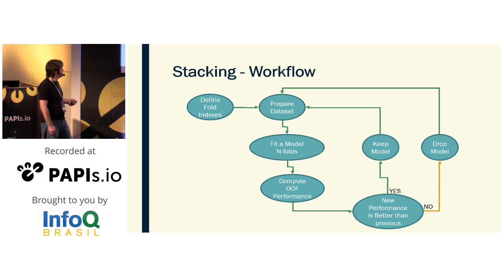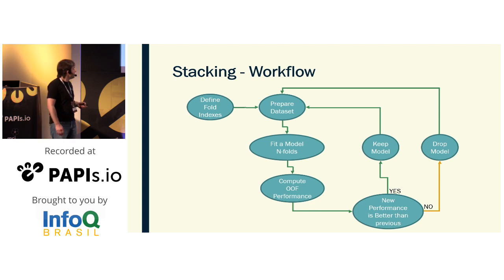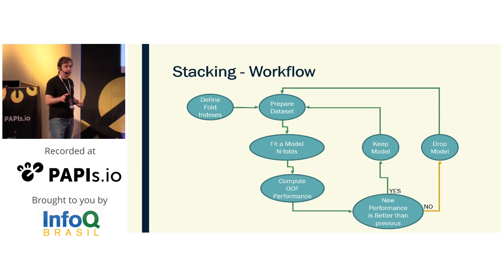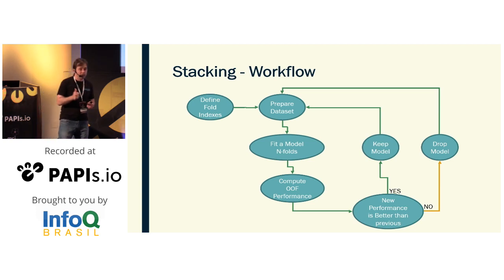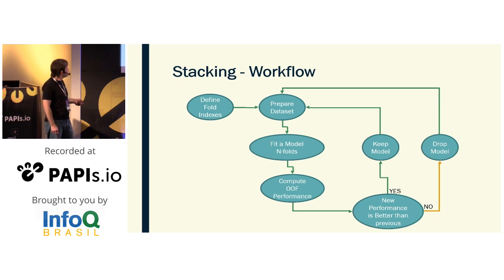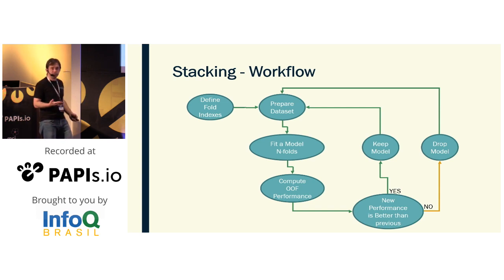The workflow: compute out-of-fold performance and do the stacking. If the performance is better than the previous, keep the new model and try to find a new one. If the performance of the new stacking is not good enough, just drop the new model and go back. Prepare new out-of-fold performance, test the final performance, and compare it with the previous one. If the performance improves, keep the new model and continue that looping process — adding new models to the stacking only if it improves overall performance.